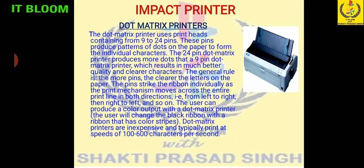Normally the dot matrix printer is used for black and white printing, but if you want color output, you use a color ribbon available for dot matrix printers. The ribbon is placed between the pin and the page; the pin strikes the ribbon and the ink goes to the page. Dot matrix printers are inexpensive because very little ink is consumed, and they are slower than laser printers, printing 100 to 600 characters per second.